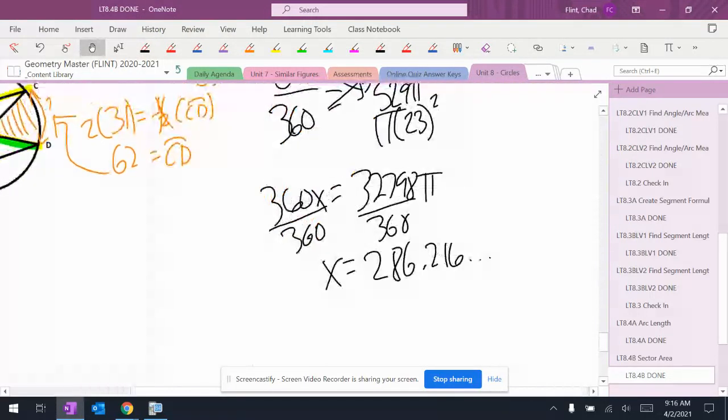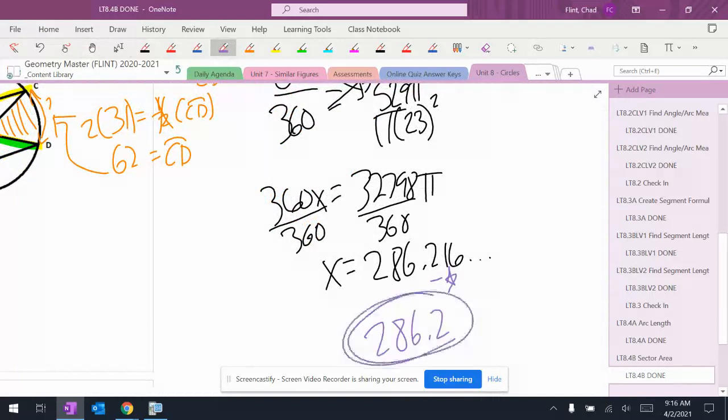Let's see, nearest tenth, so round using the one. So 286.2 is the area of that slice of the circle.